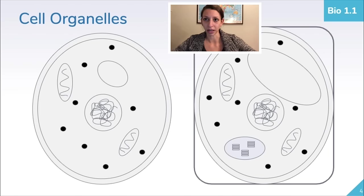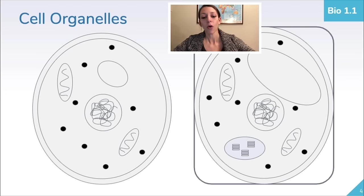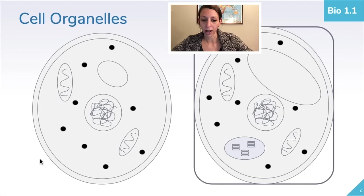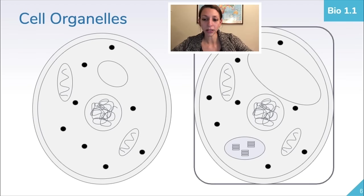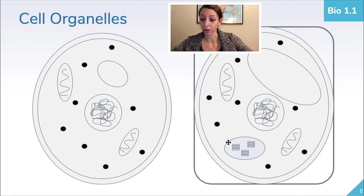Organelles are structures within cells that have specialized functions. We're going to focus on the main ones you'll need to know and recognize by picture, function, or name. Looking at these two pictures, we have the nucleus, the plasma membrane — which is the surrounding double layer around the cell — a phospholipid bilayer if we zoom in closely, the cell wall in plant cells and certain prokaryotic cells, mitochondria shown as an oval with a squiggly line, vacuoles, chloroplasts only in plant cells, and ribosomes represented by little dots.